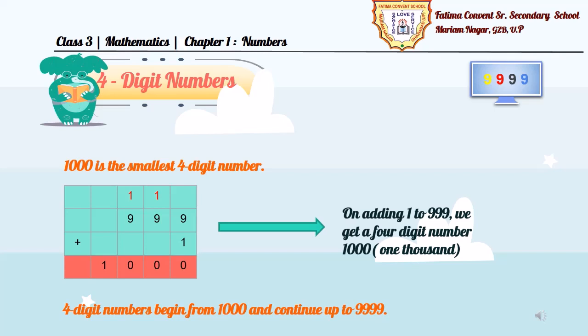4-digit numbers begin from 1000 and continue up to 9999. So, the smallest 4-digit number is 1000 and the largest 4-digit number is 9999.